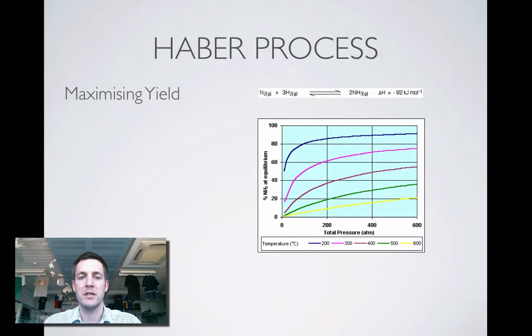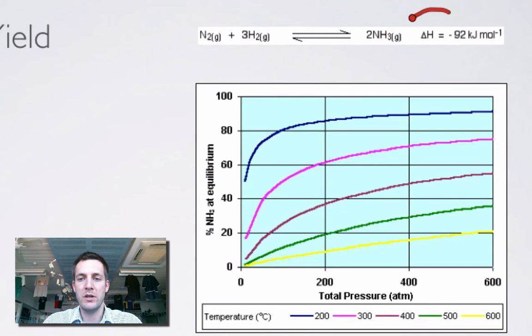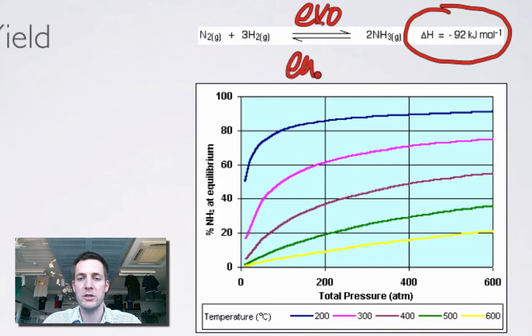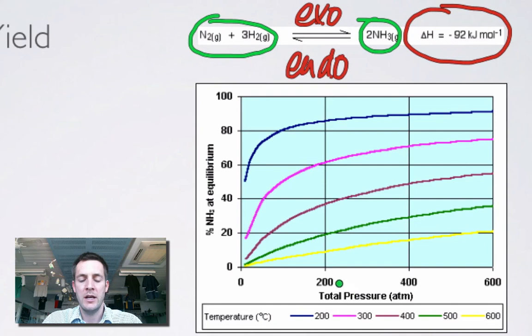Now we're looking here at a graph that shows how we might maximize yield in the Haber process. We've got the reaction here and we're told that the entropy change for it is negative, and therefore the forward reaction is exothermic in the forward direction and endothermic in the backwards direction. We can also see that there's two moles of gas on the right but four on the left, so the right-hand side exerts a smaller pressure than the left-hand side.